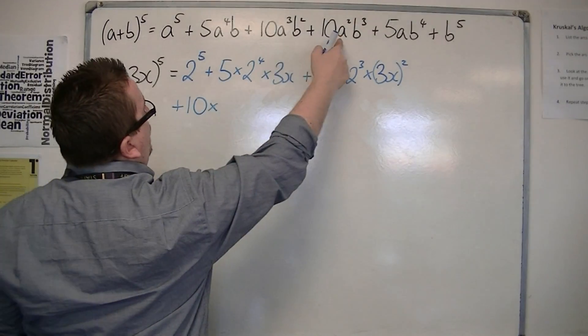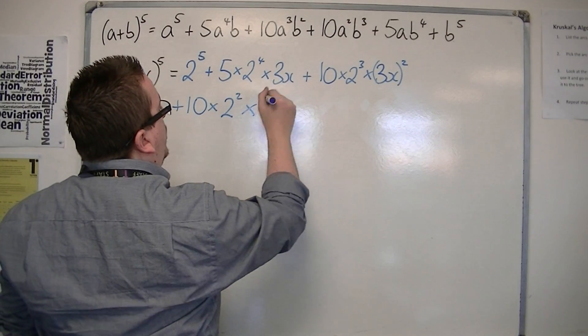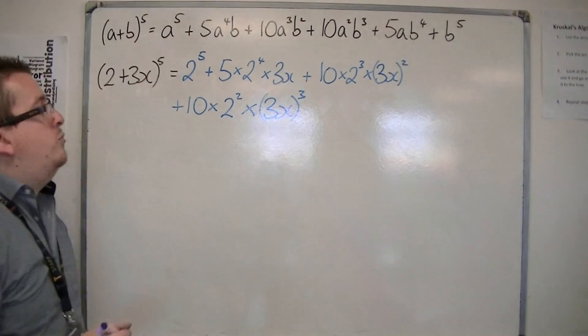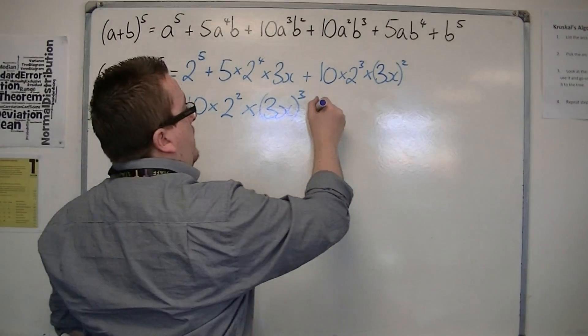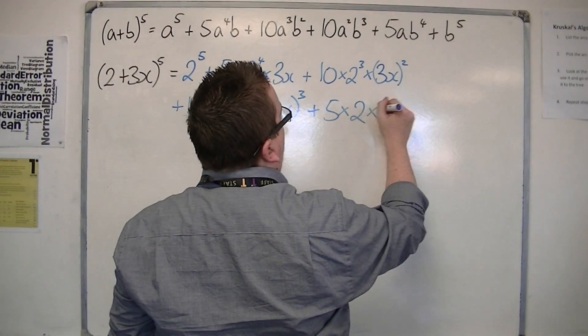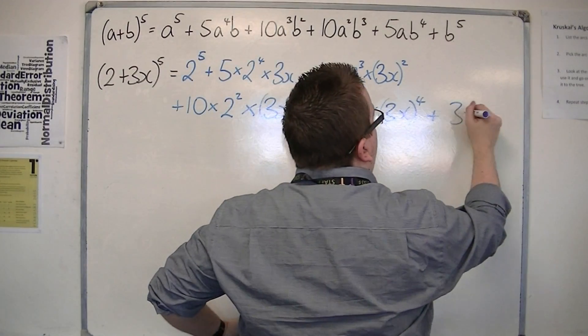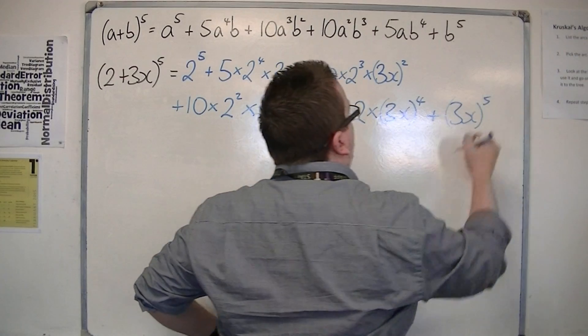Plus 10 lots of A squared times 3x cubed. Remember, put it in a bracket. Then 5 times 2 times 3x to the 4 plus finally 3x to the 5.